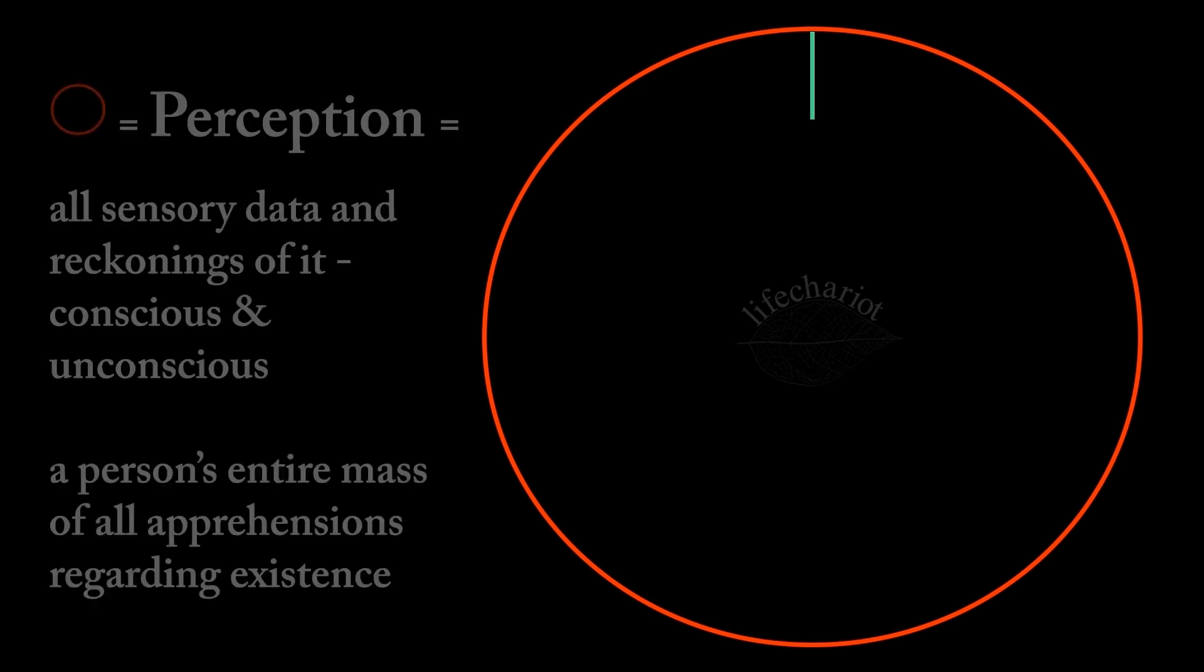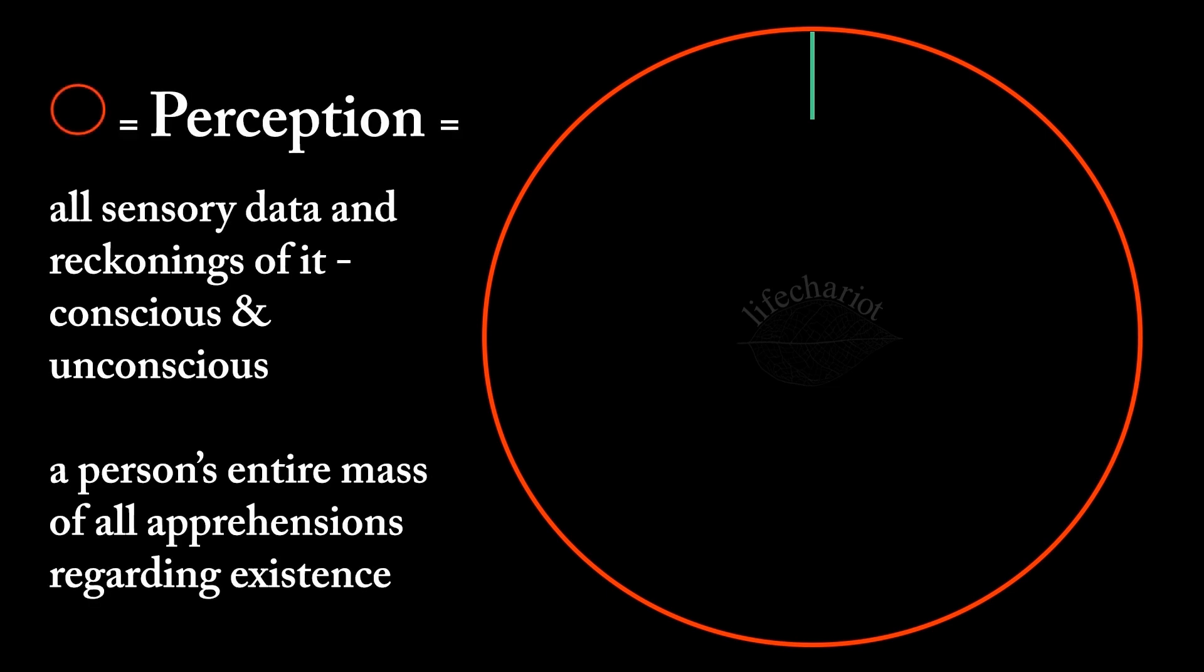Whereas perception represents our conscious and unconscious. If we have sensed anything on a conscious or unconscious level, then we have perceived that thing. All of that sensory data and our reckoning of it is our perception. It is the entire mass of all apprehensions regarding existence.